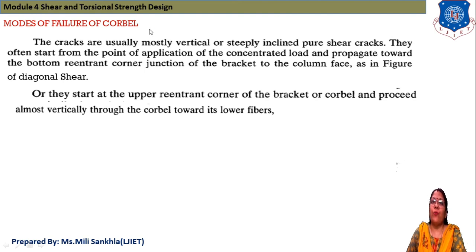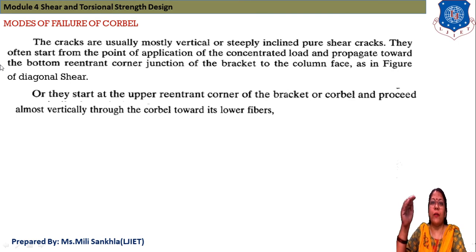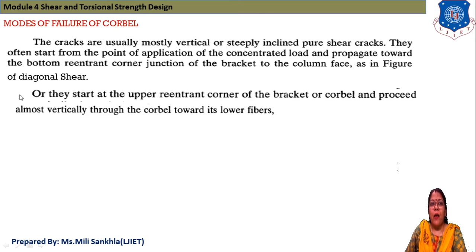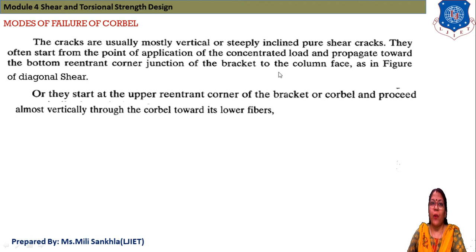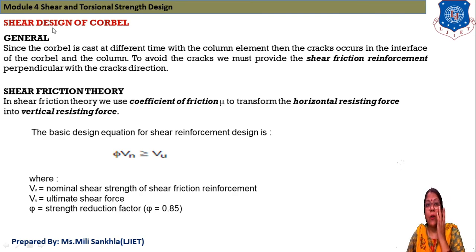The cracks in corbels are usually mostly vertical or steeply inclined pure shear cracks. They often start from the point of application of the concentrated load and propagate toward the bottom. They also start at the upper re-entrant corner of the bracket or corbel and proceed almost vertically through the corbel toward its lower fiber.